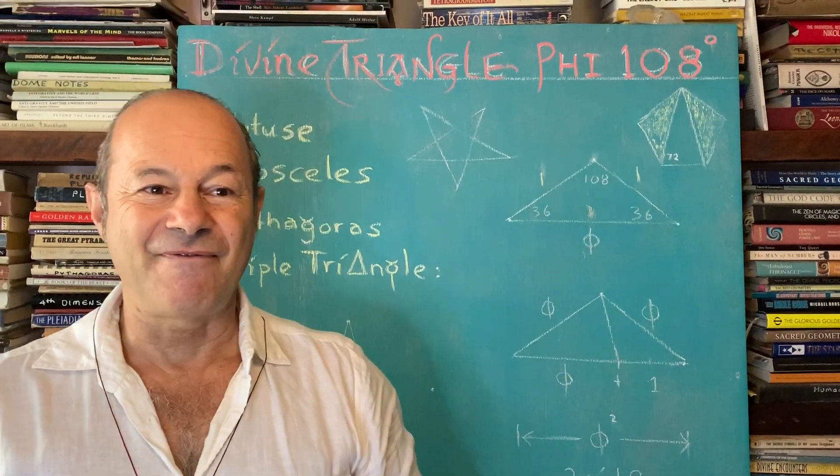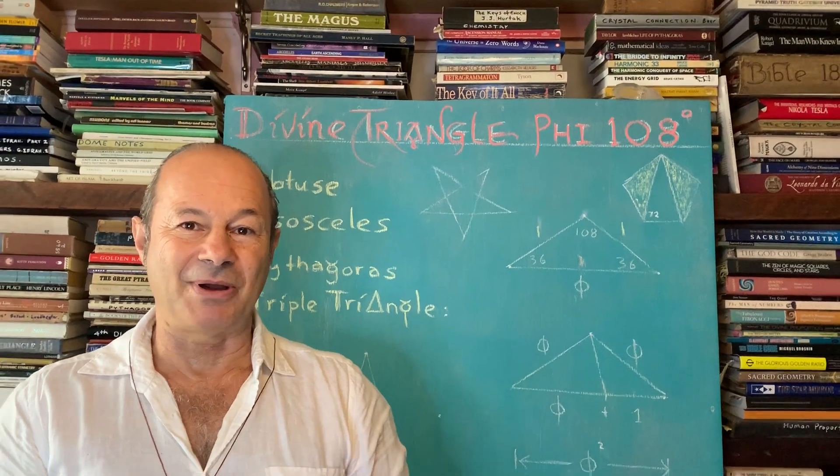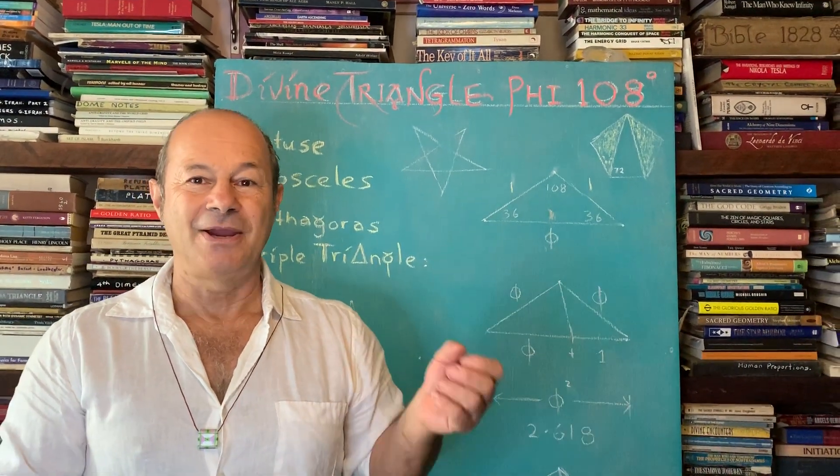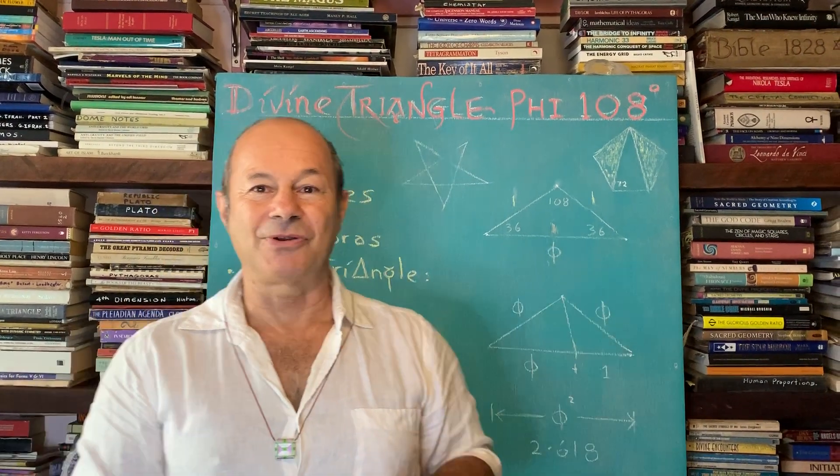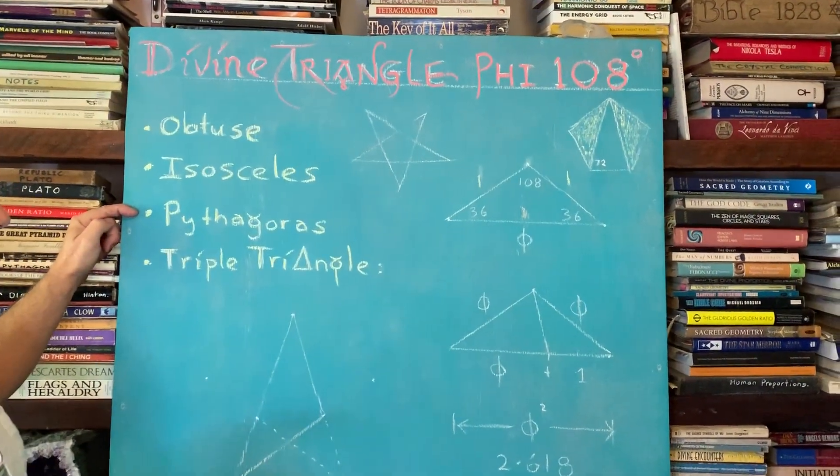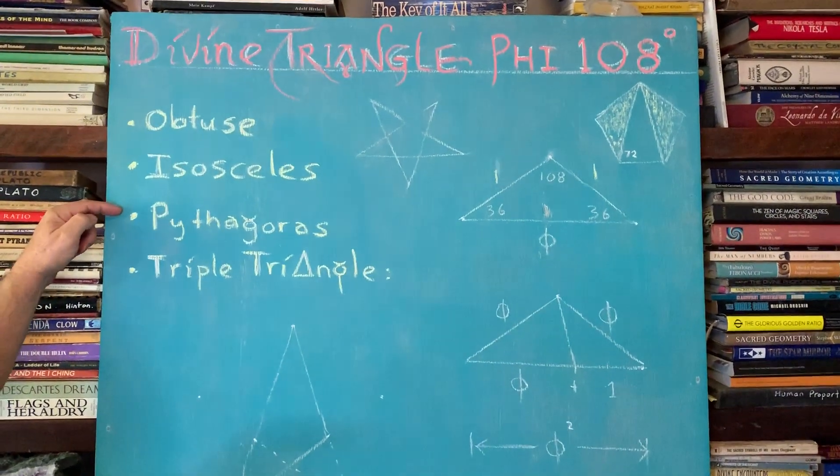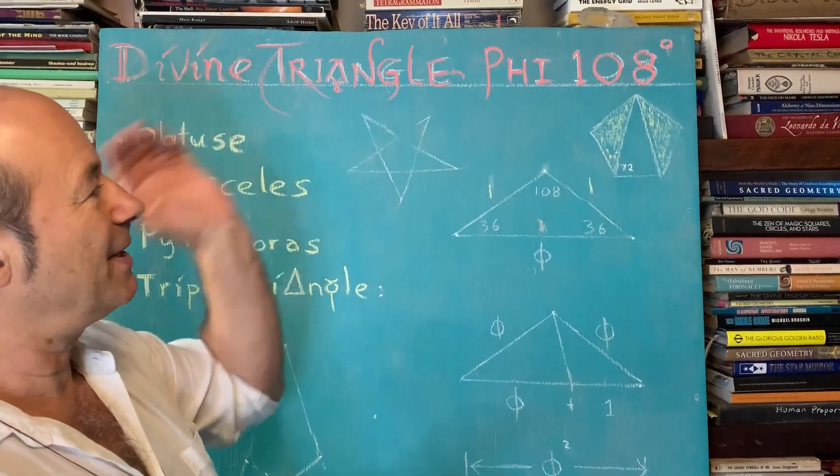Today I'd like to talk about a very important principle obeyed and loved by the Pythagoreans. So Pythagoras was about 2,500 years ago, same time as Buddha and Confucius. And Pythagoras had a very important triangle called the Divine Triangle. So this lesson today is called the Divine Triangle.